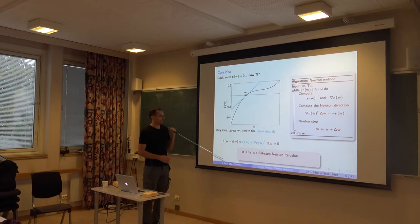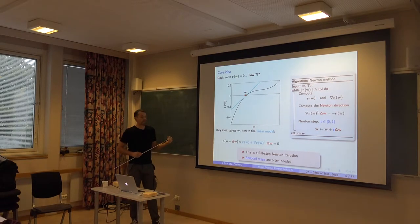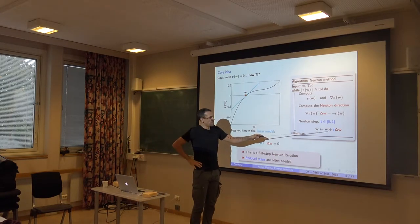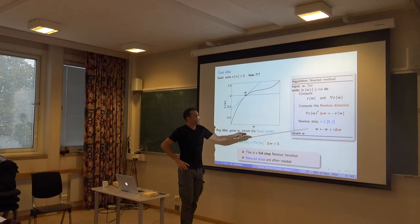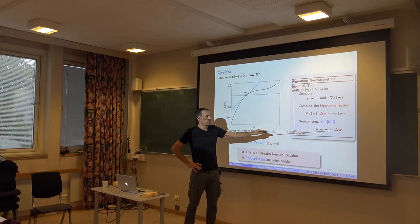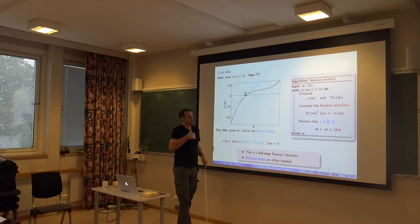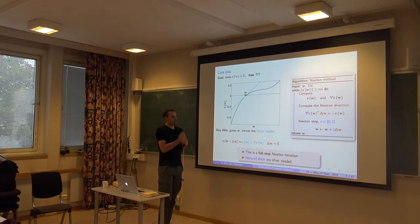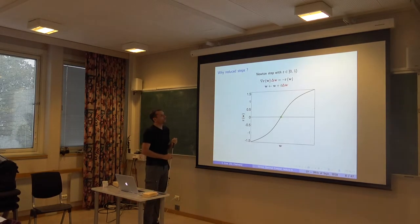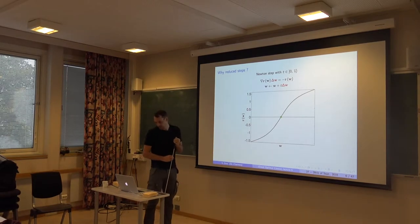So when we do that, we are actually doing what we call a full step Newton iteration. Again, that's the kind of keywords you find a lot in the literature, full step. And we'll see what the opposite of that is. Well actually, that's what it is. Reduced steps, that's when you don't take a full step. That means, instead of updating W with the full distance Newton is suggesting to travel, you actually move only a fraction of that. You select a T, that's a scalar between 0 and 1. 1 is a full step. And you may want to not move as fast as that.